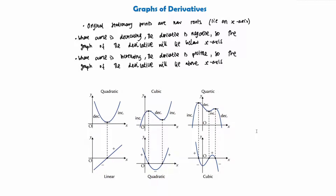The first graph is a quadratic — something with x squared in it. The stationary point in this quadratic, shown with a dotted line going to the derivative, is simply now a root, crossing the x-axis. The curve is decreasing as it approaches that stationary point, so the derivative lies below the x-axis approaching the root, then increases after, sitting above the x-axis. This gives a very nice straight line — a linear differential.